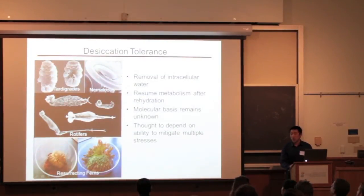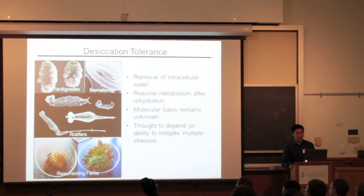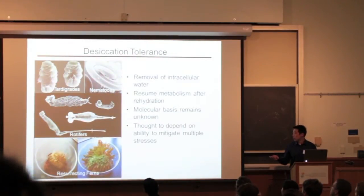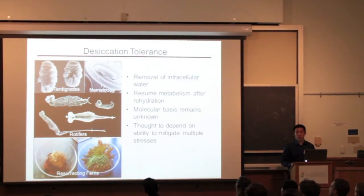Desiccation tolerance is the ability of an organism to withstand removal of as much as 95% of its intracellular water and be able to resume normal metabolism upon rehydration. Few organisms are desiccation-tolerant, like tardigrades, nematodes, rotifers, and resurrecting worms.